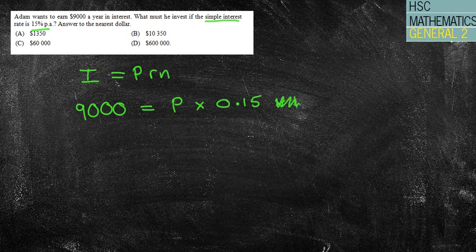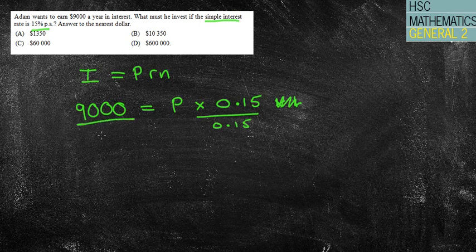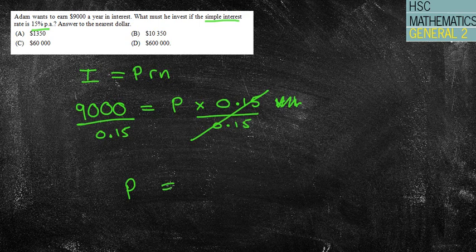So in that case we can get rid of this—I mean times one doesn't need to be there. The opposite of times 0.15 is divided by 0.15. If I divide both sides by that amount, we will be left with 9000 divided by 0.15. We're left with $60,000.